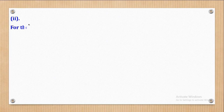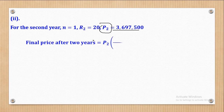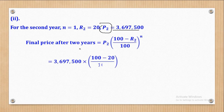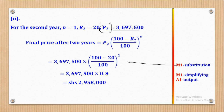Part B(ii): For the second year, N equals 1 and R equals 20%. The amount from the first year, 3,697,500, becomes the principal for the second year. Using the depreciation formula and substituting, simplifying the bracket and then the full expression gives the amount after two years as shillings 2,958,000. M1 for substitution, M1 for simplifying, and A1 for the output.